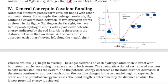We discussed ionic bonding in the prior video, so we're going to jump into covalent bonding now. Covalent bonding, as you may recall, is formed by two non-metal atoms. This plot here illustrates the type of interactions that are formed when a covalent bond forms — you basically have two different atoms, both non-metals.